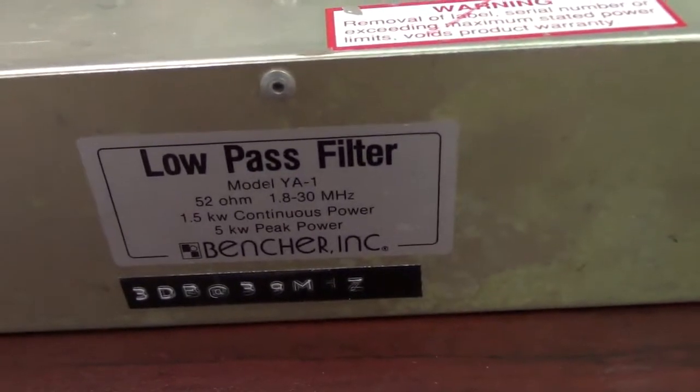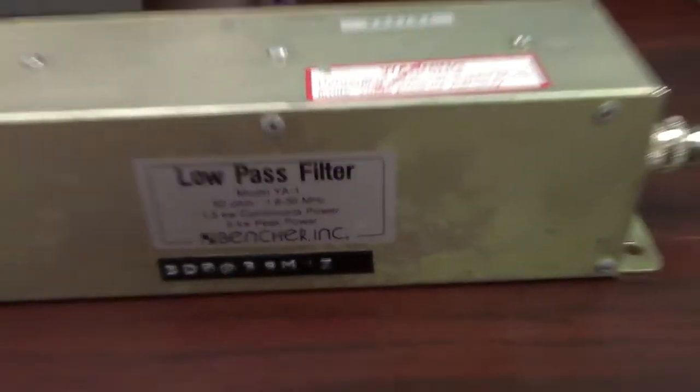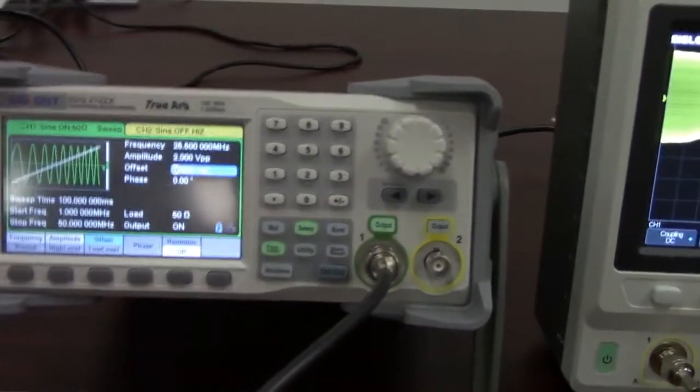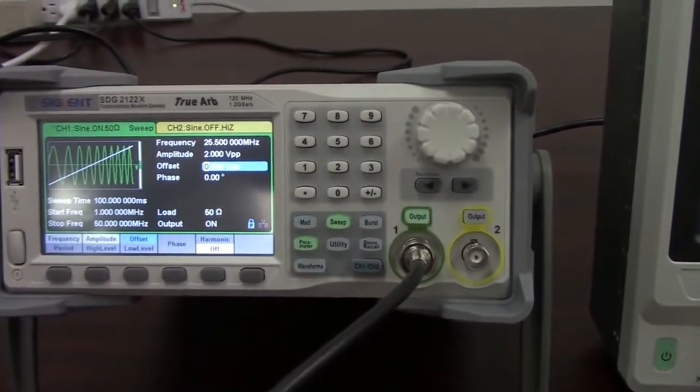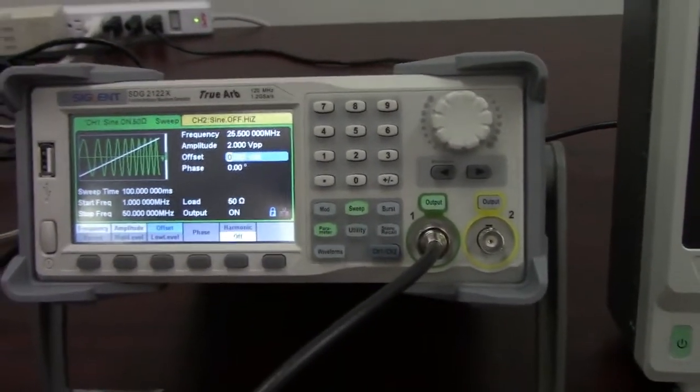So we have our RF filter. This one runs from 1.8 to 30 megahertz. And so I selected an SDG2000, the 2122X.